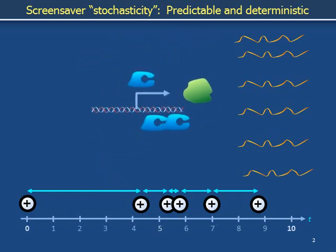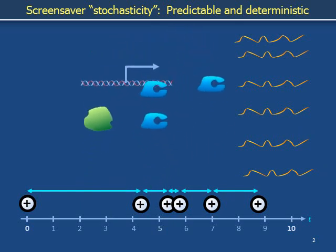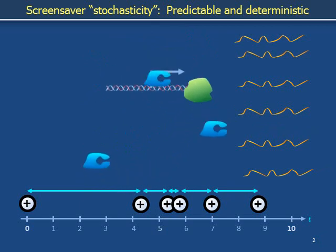Nevertheless, this animation displays a property often associated with stochasticity: the fact that there is a distribution of anything at all, there is variety.